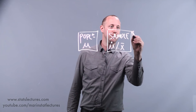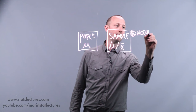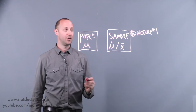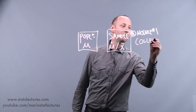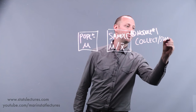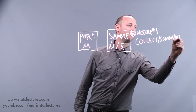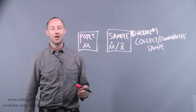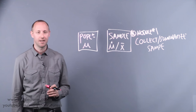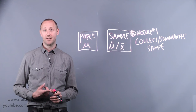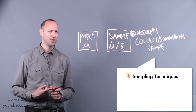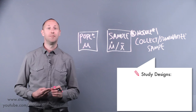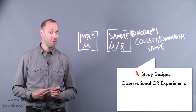In module one, we're going to talk about how to collect and summarize a sample. Here we talk about how to get our hands on some data — different ways of collecting, which we call sampling techniques. We'll talk about things like simple random samples or stratified samples, as well as different study designs, such as observational or experimental.